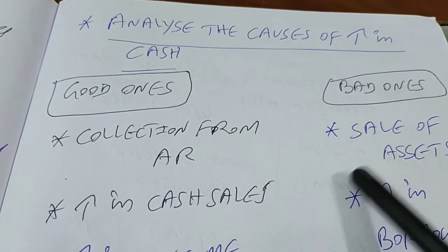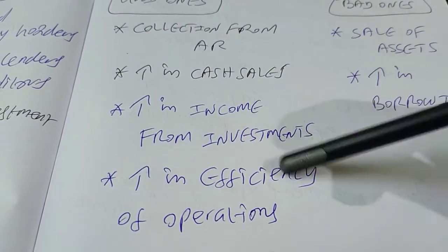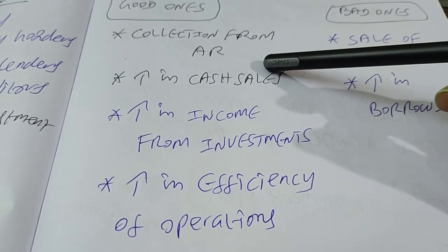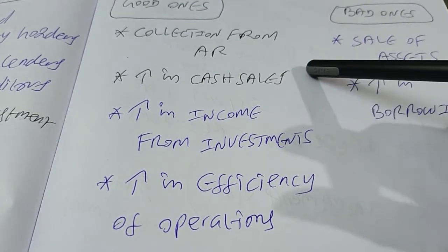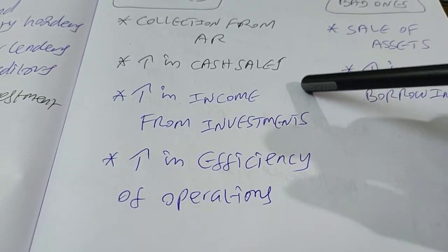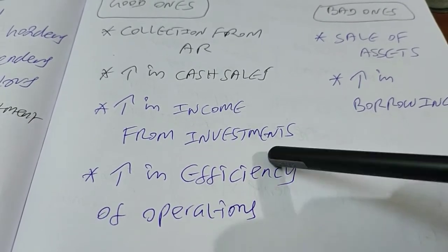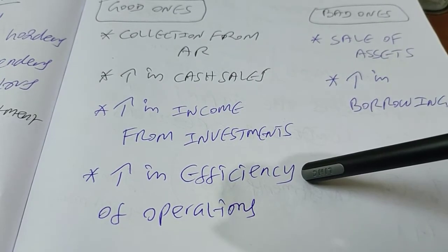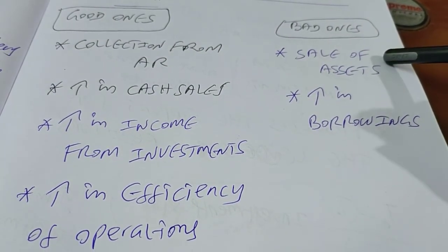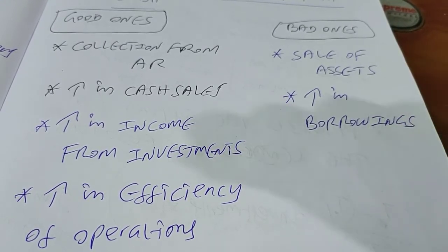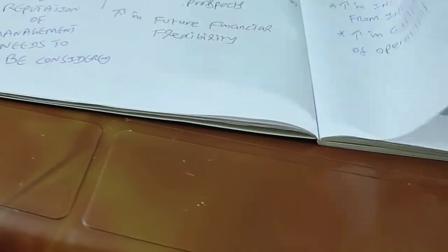Analyze the causes of increase in cash carefully. Good causes include: cash collected from accounts receivable, increased cash sales, profit from investments, and cost reduction initiatives. Bad causes include: selling assets and increasing borrowings. You have to be careful before concluding whether an increase in cash is good or bad for the firm.